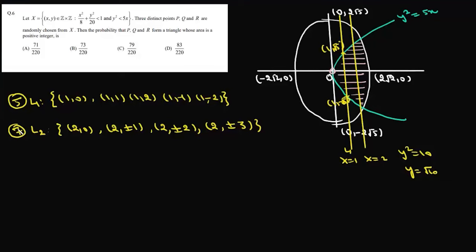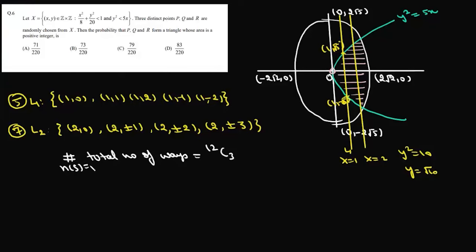Three distinct points P, Q, and R are randomly chosen from X. We need to find the probability that PQR form a triangle whose area is a positive integer. The total number of ways to choose these three points from 12 points is 12C3, which is our sample space N.